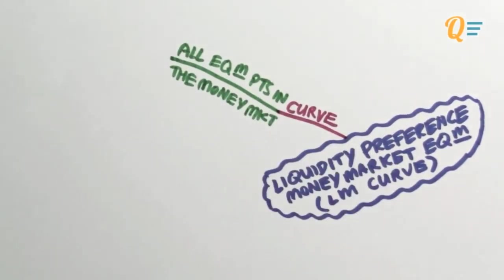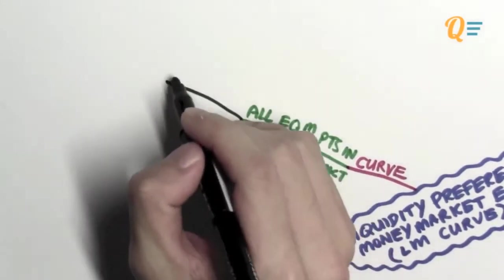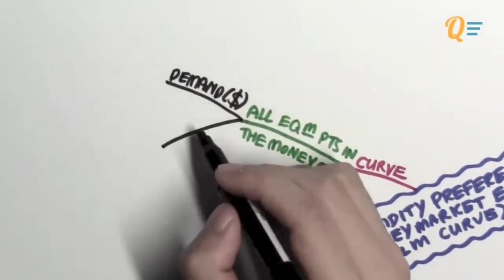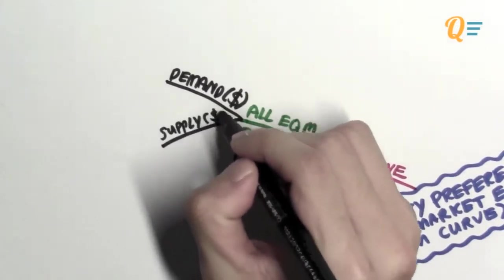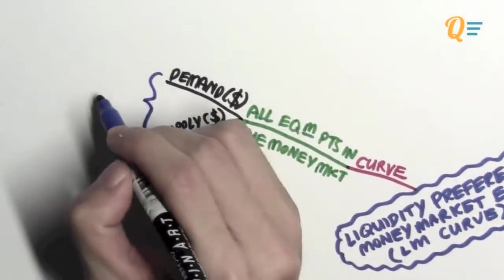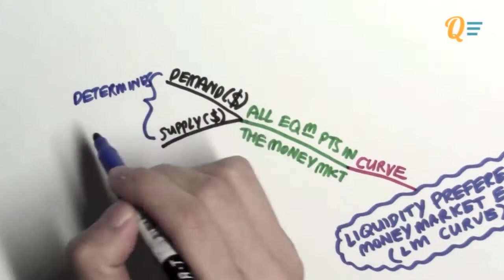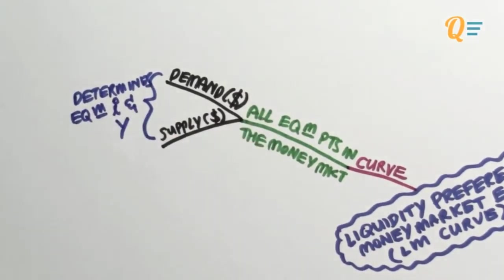From the previous video, we learned a lot about the money market. There is equilibrium in the money market when the demand for money meets the supply of money. When there is equilibrium in the money market, we obtain the equilibrium level of interest rates, income, as well as real money circulating in the economy.